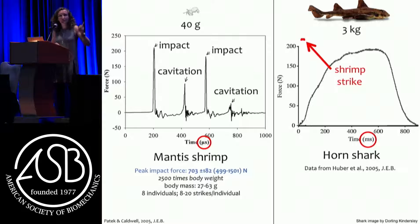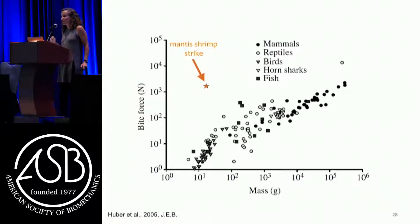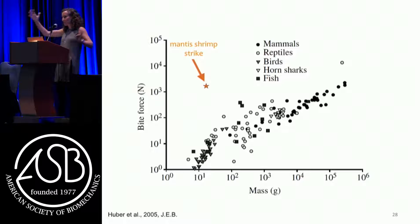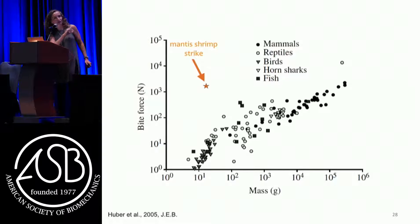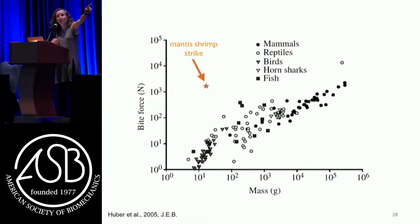This really captures the essence of what impulsive does for these animals. Based on mass and peak force, a mantis shrimp at the order of 10 grams can do what a typical vertebrate - across mammals, reptiles, birds, sharks, and fish - requires a 10-to-the-fifth-gram animal to do, up at the far right-hand point as an alligator. So impulsive animals are small, but they achieve large-animal performance - super interesting ecologically.